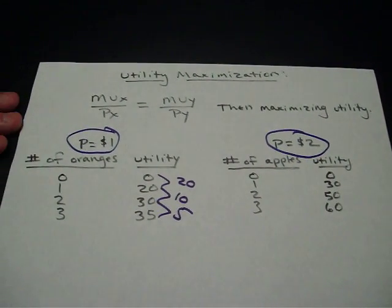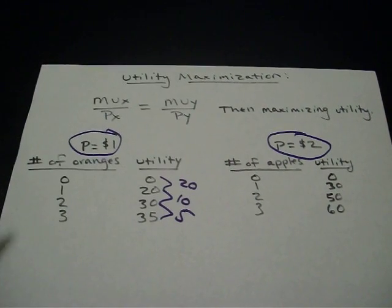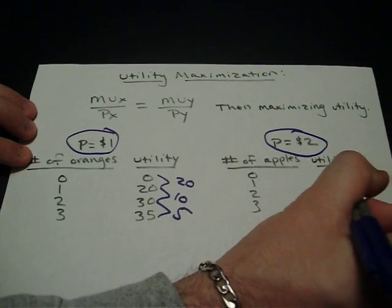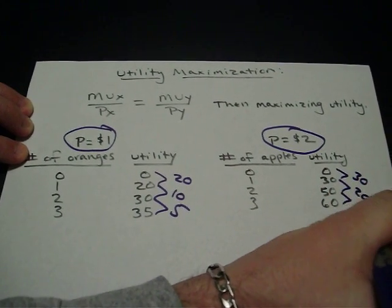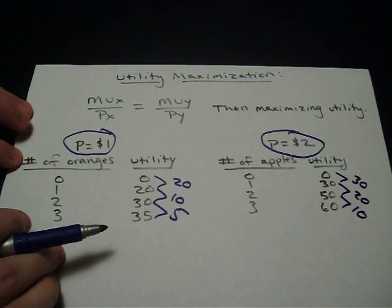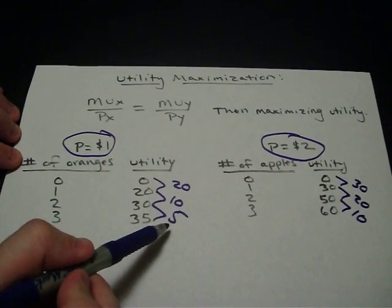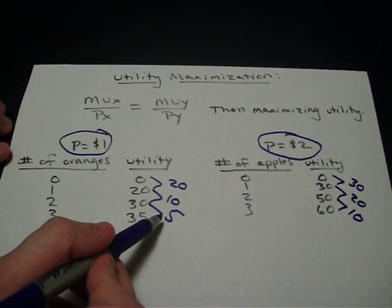So there's the marginal utility that we get from consuming more and more oranges. For apples, between here and here it was 30, between here and here it was 20, between here and here it's 10. The number that you want to use is the last bit of marginal utility that we get from the consumption of the last one.